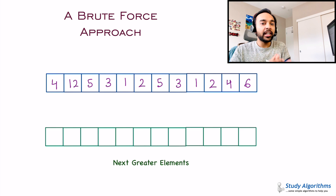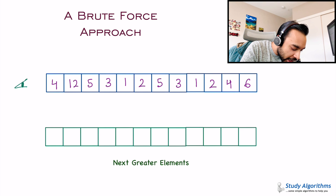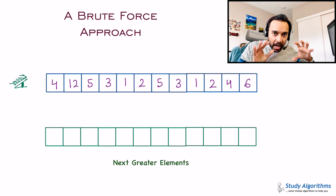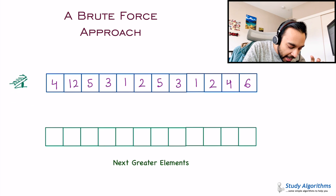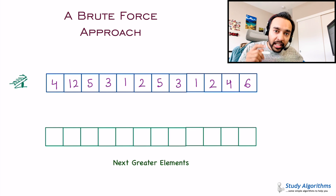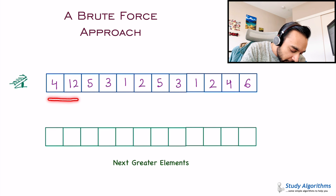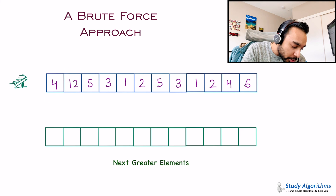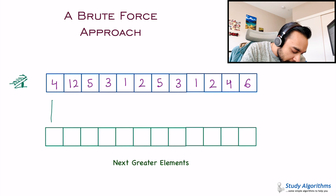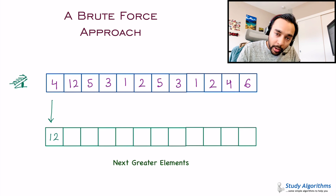How do you begin looking for the next greater element? The rule of thumb is you need to start looking from the left direction. Let us start from the beginning — I have element 4. When I start looking from the left, what is the first element I find that is greater than 4? That will be 12. So the next greater element for element 4 is simply 12. This is how you populate your array.